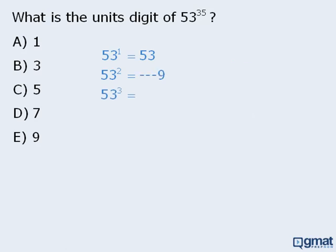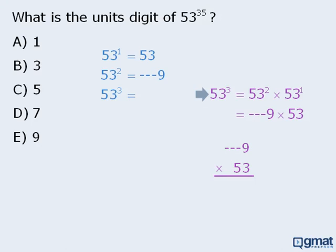To find the unit's digit of 53 cubed, we must recognize that 53 cubed is equal to 53 squared times 53 to the power of 1. Now we just determined that 53 squared has a unit's digit of 9, and 53 to the power of 1 is equal to 53. To find the unit's digit of this product, we are only concerned with the product of the two unit's digits. When we multiply 3 times 9, we get 27, so the unit's digit here is 7.